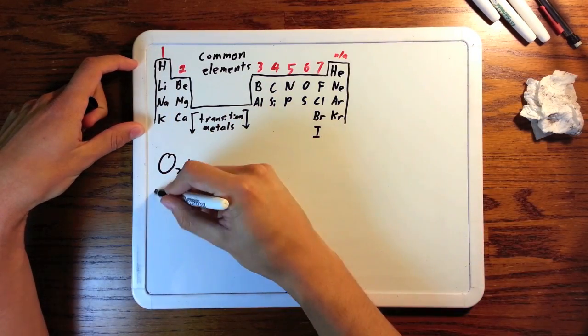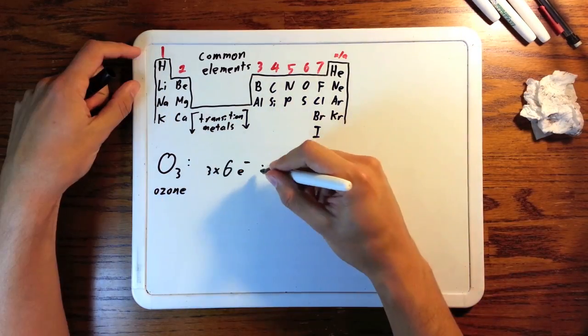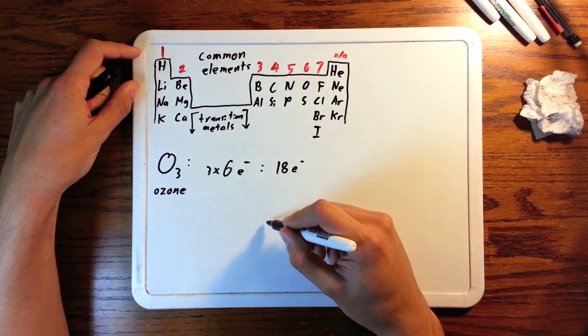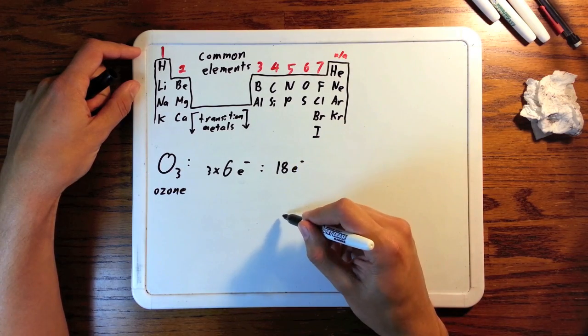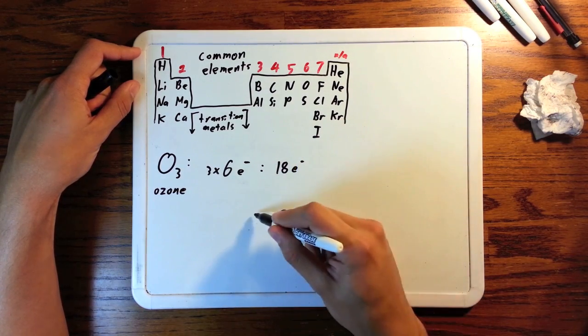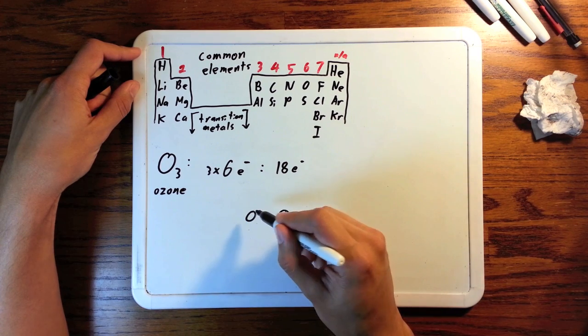Let's look at another example. How about ozone, O3. 3 oxygens, no charge, so 18 electrons. I'll draw this as a line, a linear molecule, just as a rough approximation until we get the structure figured out.